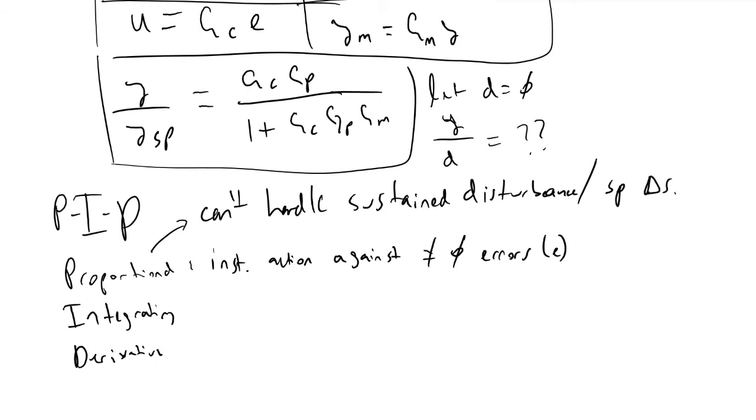And so an example of this in a sustained disturbance would be if we had a continuous wind blowing two degrees north for the entire time that our model is running and our original model did not take that into account. A proportional only controller cannot handle that. And then a set point change is equivalent to just moving the target.